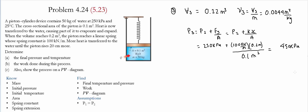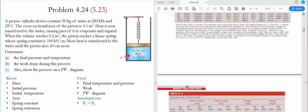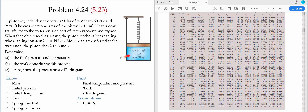To find the final temperature, we go to Table A5 at 450 kilopascals. The specific volume of the saturated liquid v_f is 0.001088 and the saturated vapor v_g is 0.41392. Our specific volume of 0.0044 falls between these two values, indicating a saturated mixture. Therefore, the temperature at state 3 is 147.90 Celsius.